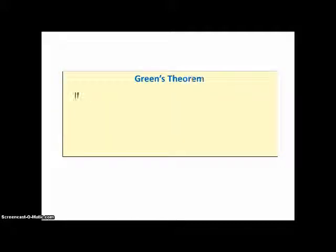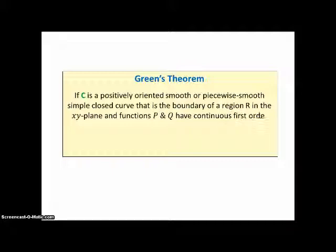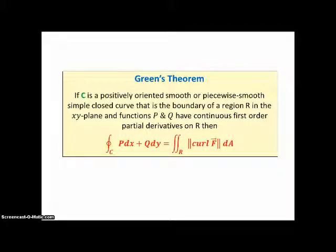Let's look at Green's theorem again from this point of view. If C is a positively oriented, smooth or piecewise smooth, simple closed curve that is the boundary of a region R in the XY plane, and functions P and Q have continuous first-order partial derivatives on R, then the line integral on C of P dx plus Q dy equals the double integral on R, the region bounded by C, of the length of the curl of F. This is Green's theorem in a nutshell.